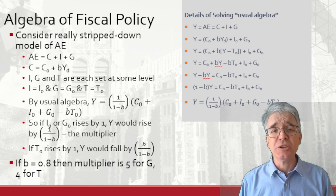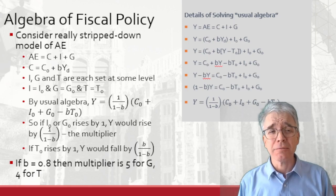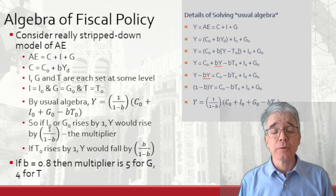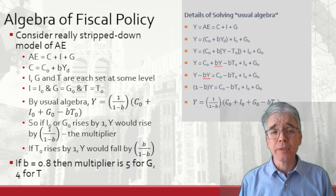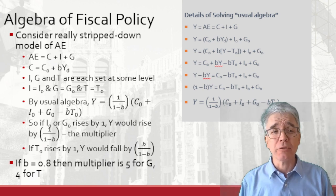I, G, and T are each set at some exogenous level: I naught, G naught, T naught. We do the usual bit of algebra. The details are up in that gray box. Solve Y equals 1 over 1 minus B times all our terms involving the naught.